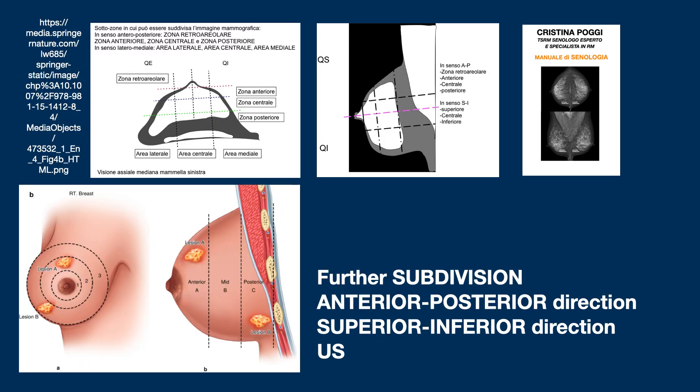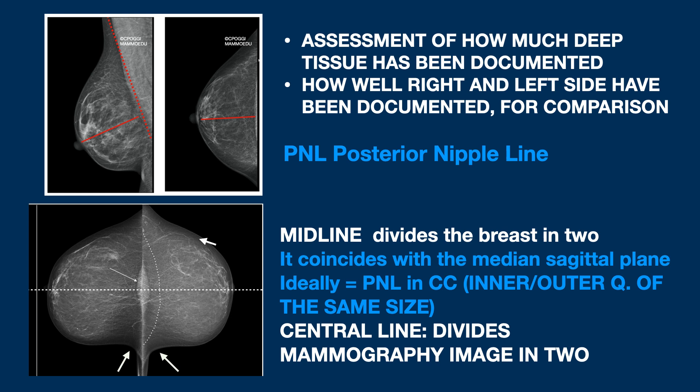There is a further subdivision, the ultrasound one, which divides the breast anteriorly-posteriorly and superior-inferiorly in three parts. As I often emphasise in my lectures, it is extremely important to be able to relate the images produced to the anatomical reality. To assess whether the deep planes have been documented as extensively as possible, we speak of the PNL posteriorly nipple line.